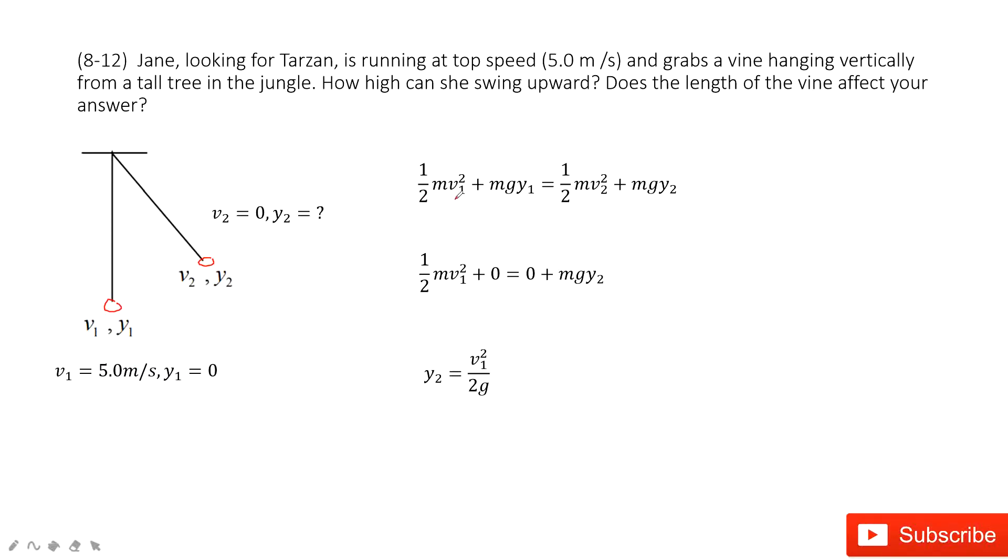Initial energy is one-half mv1 squared kinetic energy plus the potential energy mgy1, and equals the final kinetic energy one-half mv2 squared plus the final potential energy mgy2.